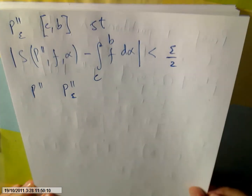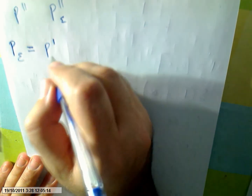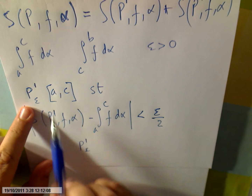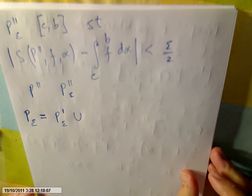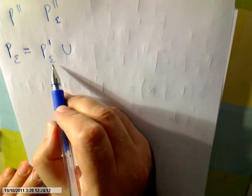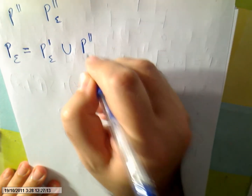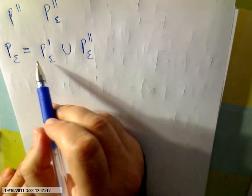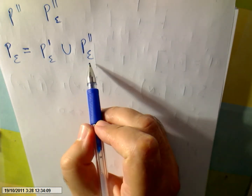Now I'm going to define P_ε to be P′_ε union P″_ε. So P_ε equals P′_ε ∪ P″_ε, and this is of course a partition of [a,b] — there is no doubt about it. This partition has a particular characteristic: it is a partition of [a,b] such that P finer than P_ε implies P finer than P′_ε, and also P″ finer than P′_ε.